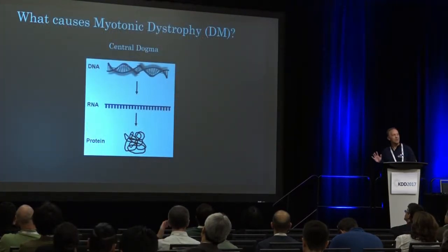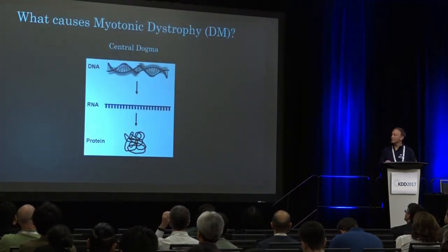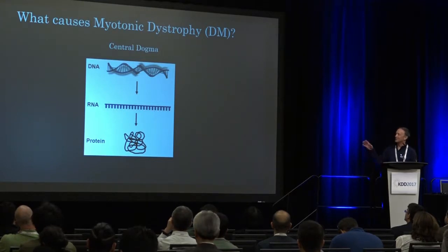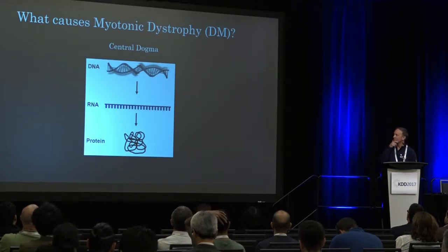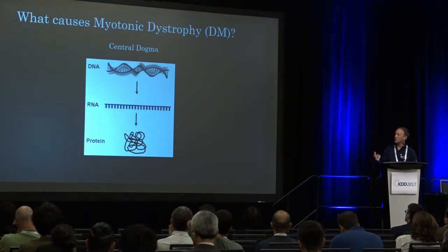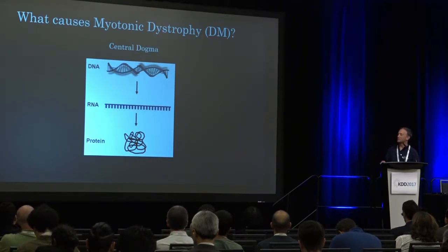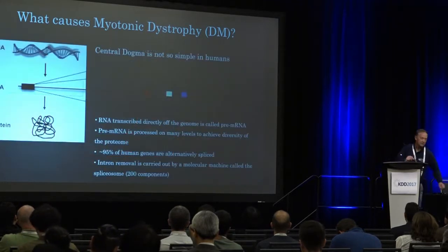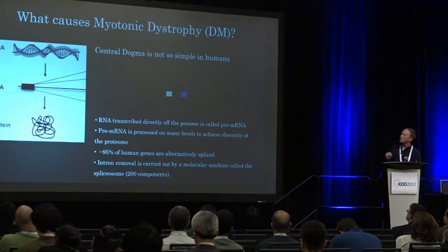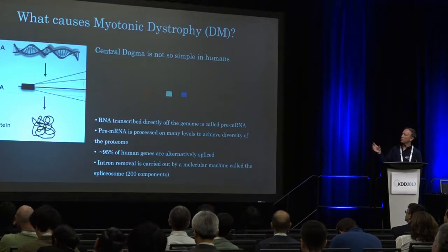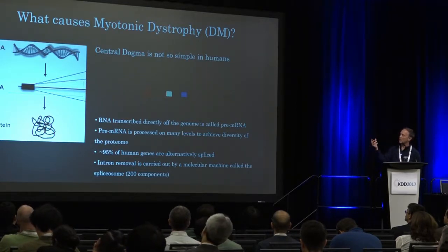Let's do a quick review of the central dogma. DNA is the blueprint. What cells do with the DNA is make a transient copy called RNA or mRNA, and that mRNA codes for a protein. That's the central dogma. In bacteria or simple cells, it's a simple one-to-one-to-one: a piece of DNA codes for RNA and codes for a protein. But in humans and most mammals, you make a copy called pre-mRNA, which is transcribed directly off the genome.